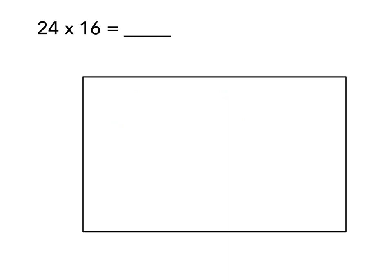Here is our first problem: 24 times 16 equals blank. I see that I have an open array here, so the first thing I need to do is label my open array. One dimension is going to be 24, and the other dimension is going to be 16. I purposely chose to make this dimension 24 because it's longer, and 24 is a larger number than 16.